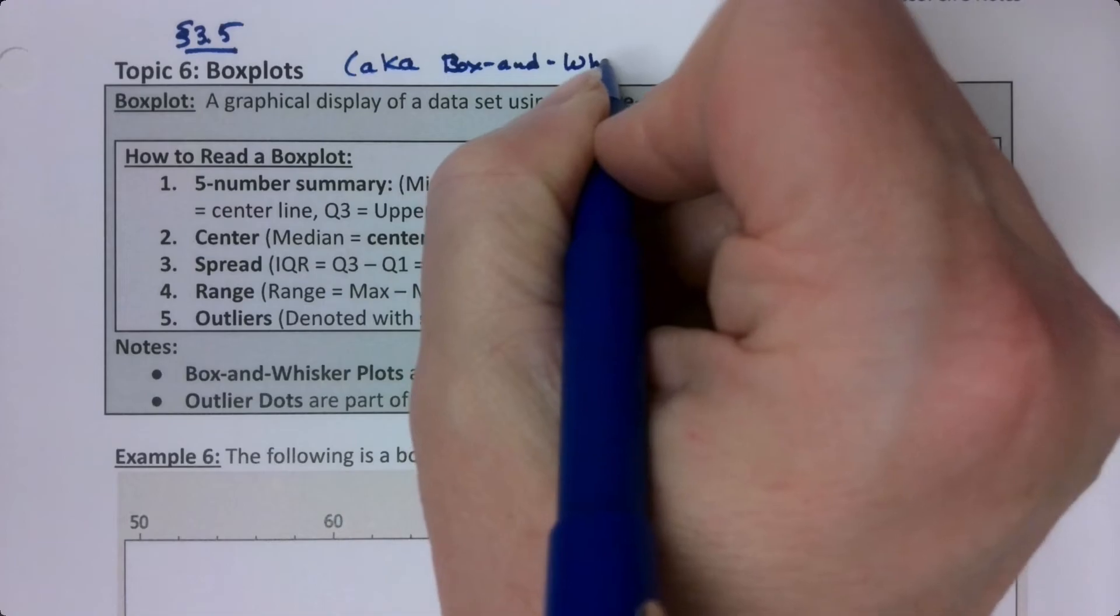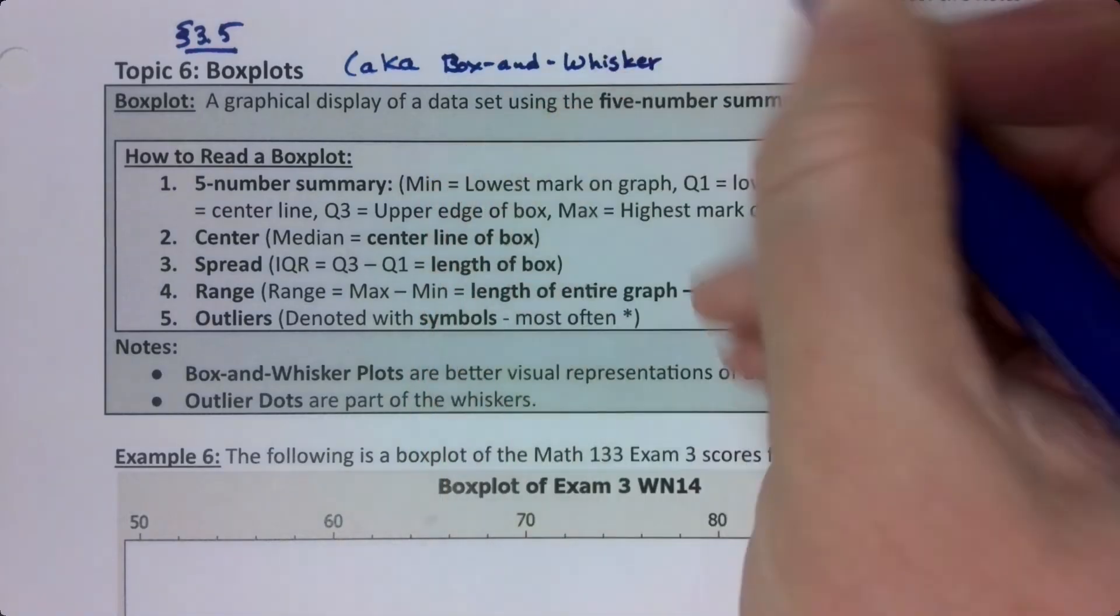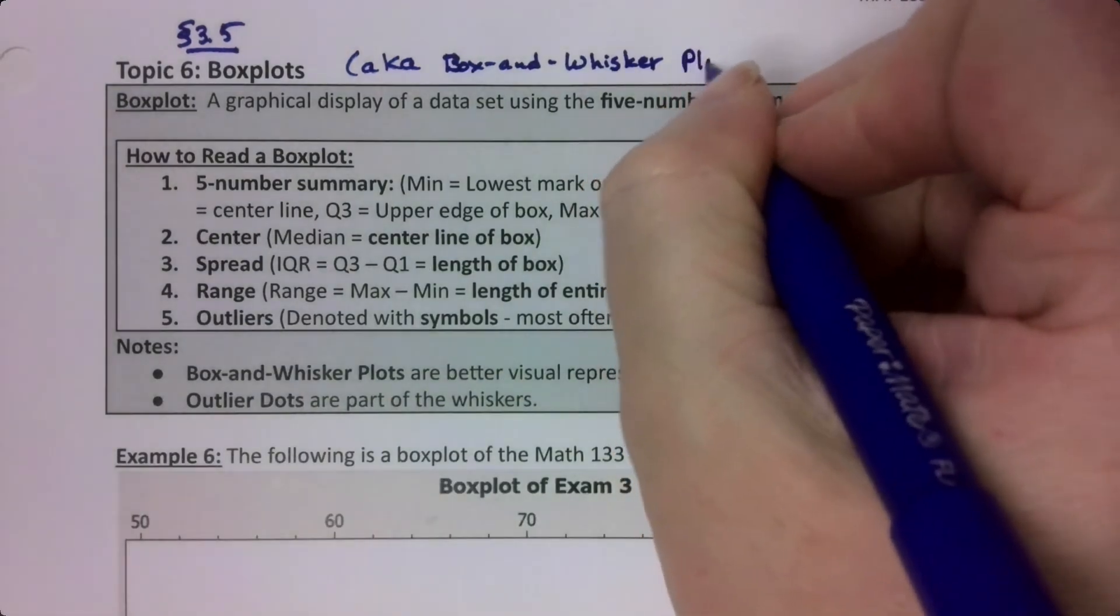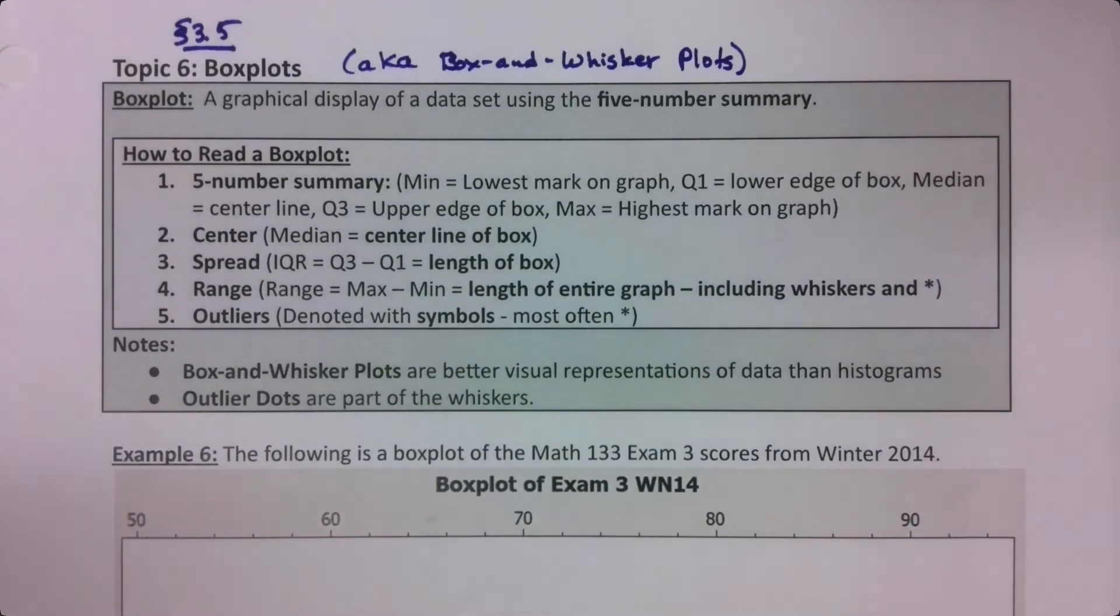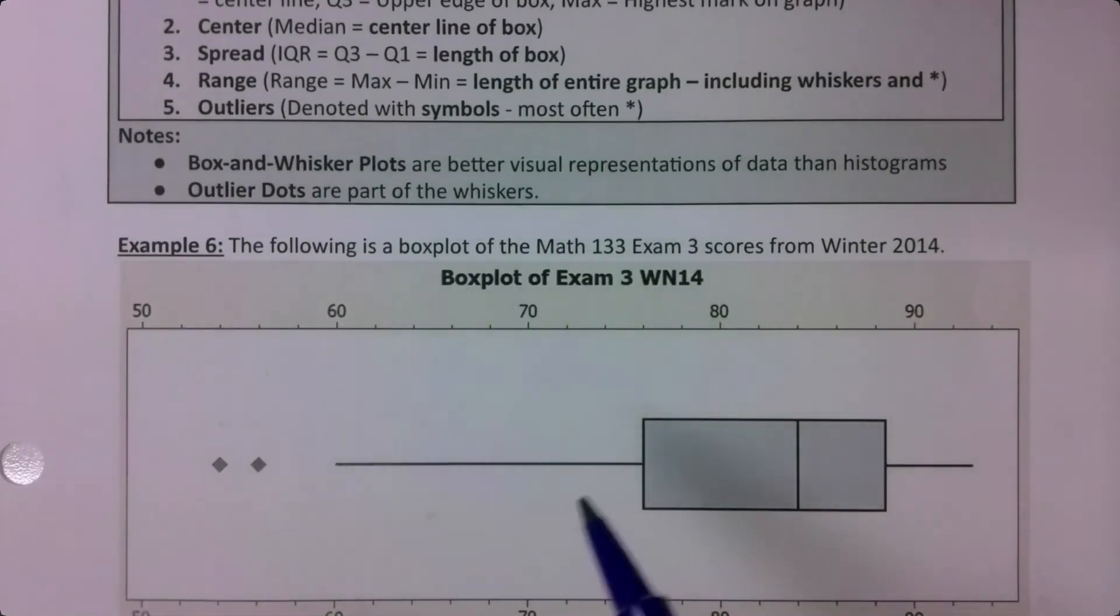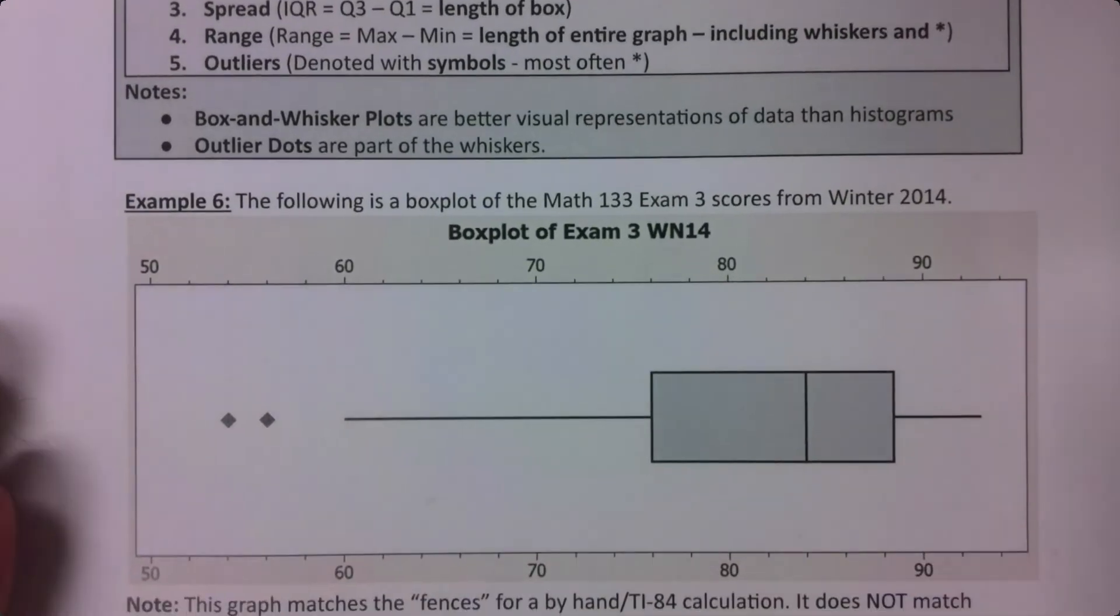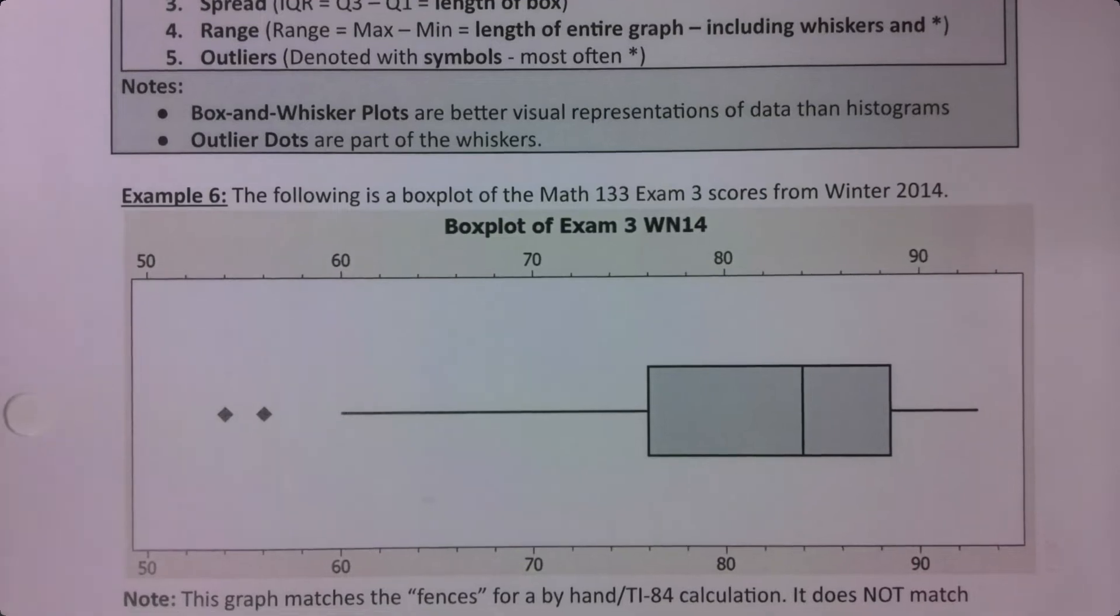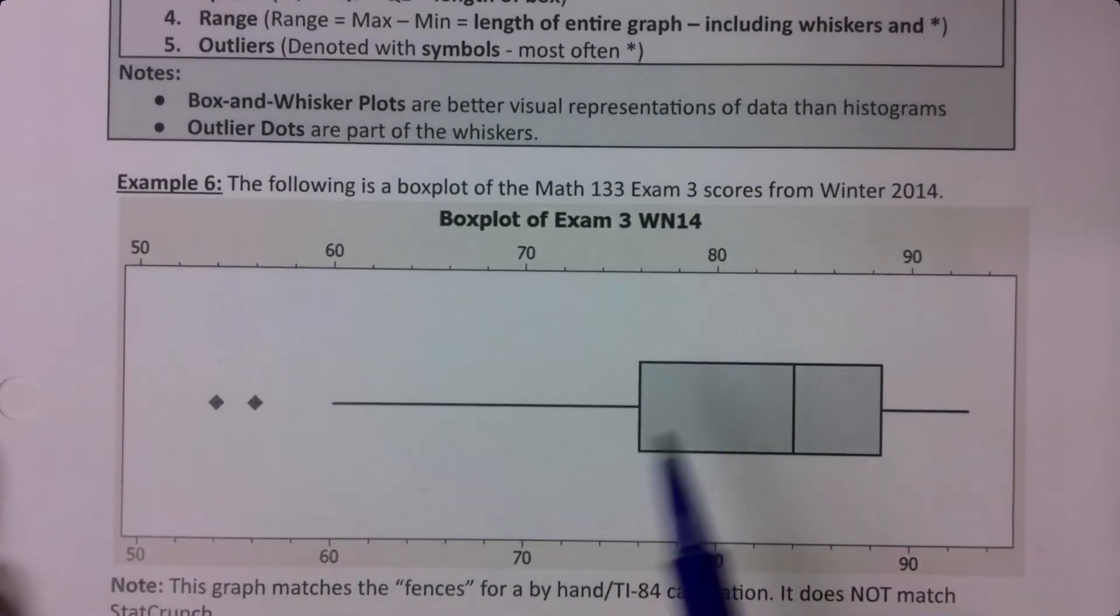For obvious reasons, because it has a box with some whiskers on it. Before I go any further, I actually need to switch the pages. Confession time: when I first made these videos I made them with more with a TI-84 than StatCrunch, and also with a different program called Minitab. Minitab aligns pretty well with the TI-84.